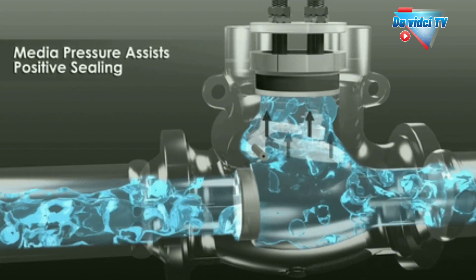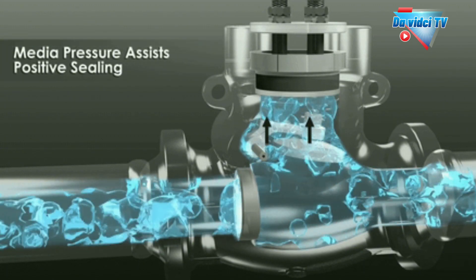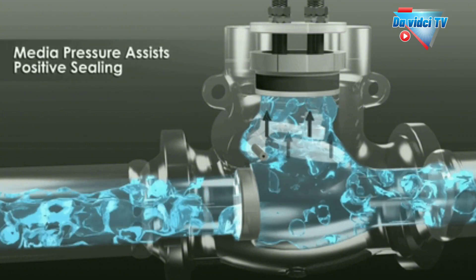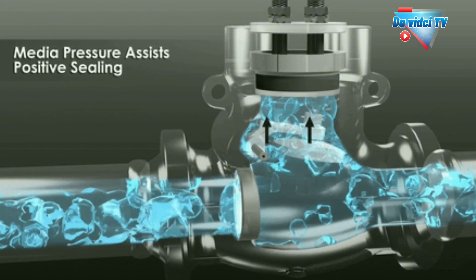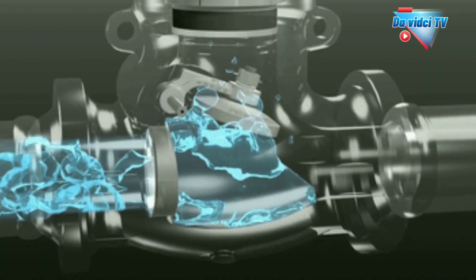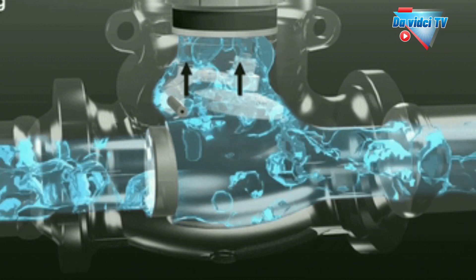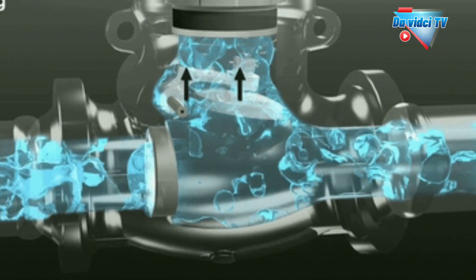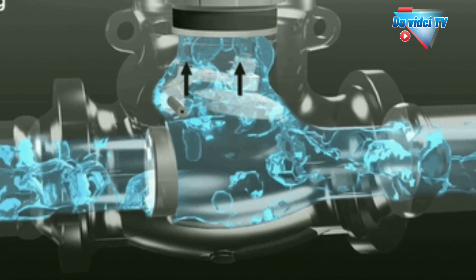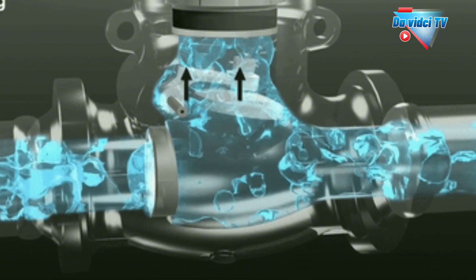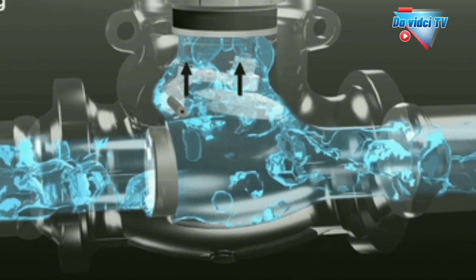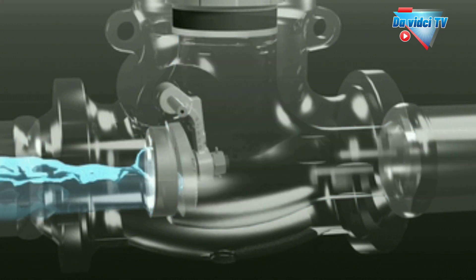To put it simply, check valves act as a one-way gate within your system. Pressure applied to the inlet will be able to pass with little impedance. However, if pressure is applied to the outlet side, the valve will close. This keeps media — gases or liquids — flowing in the desired direction and preventing backflow.